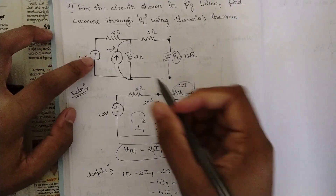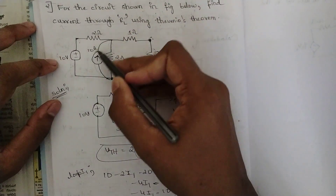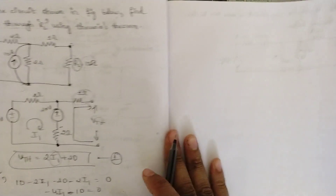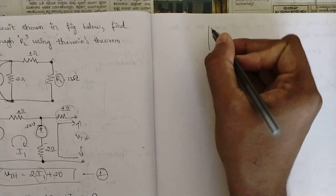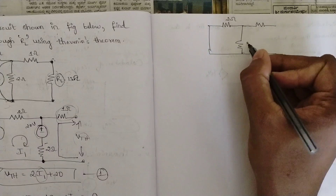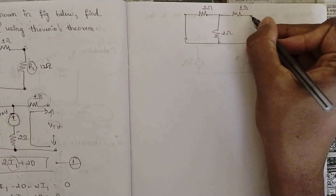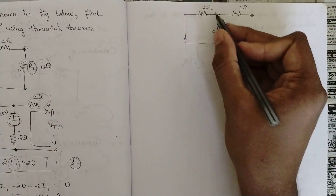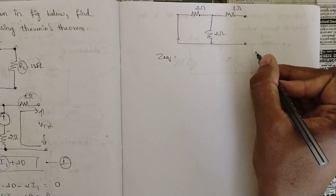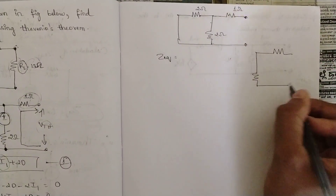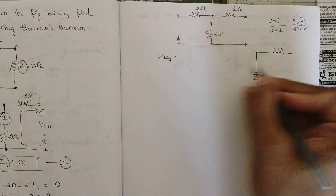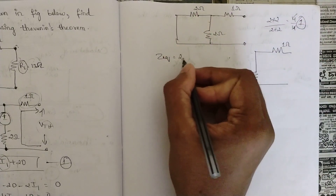Next, find Z_eq: remove the voltage source (short) and the current source branch (open), and remove the load. We are left with 2Ω, 2Ω, and 1Ω resistors. The two 2Ω resistors are in parallel: (2×2)/(2+2) = 4/4 = 1Ω. This 1Ω is in series with the remaining 1Ω, giving Z_eq = 2Ω.